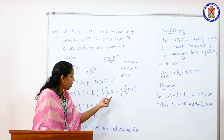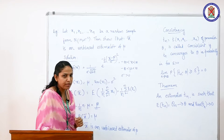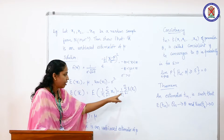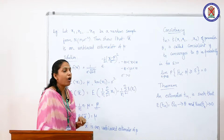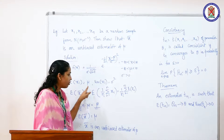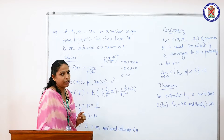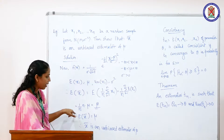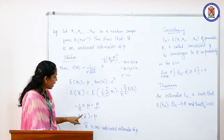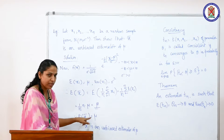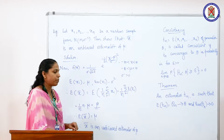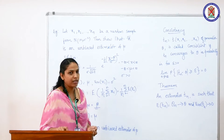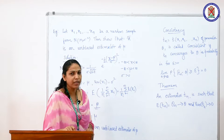Then (1/n) * summation from i=1 to n — since the mean of the normal variable is mu, when we sum these expectations from 1 to n we get n times mu. We cancel n and we get mu. So the expectation of x bar is equal to mu. Since the expectation of x bar is equal to mu, x bar can be taken as an unbiased estimator of the population mean mu.